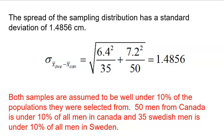I cannot use this formula until I am sure that my samples are independent of each other. So that means that both samples, the 35 men from Canada, 35 has to be under 10% of all Canadian men, which I'm pretty sure it is. There's millions of Canadian men. And 35 Swedish men needs to be under 10% of all men in Sweden, which again, a million in Sweden, so I'm pretty sure that's going to be true.